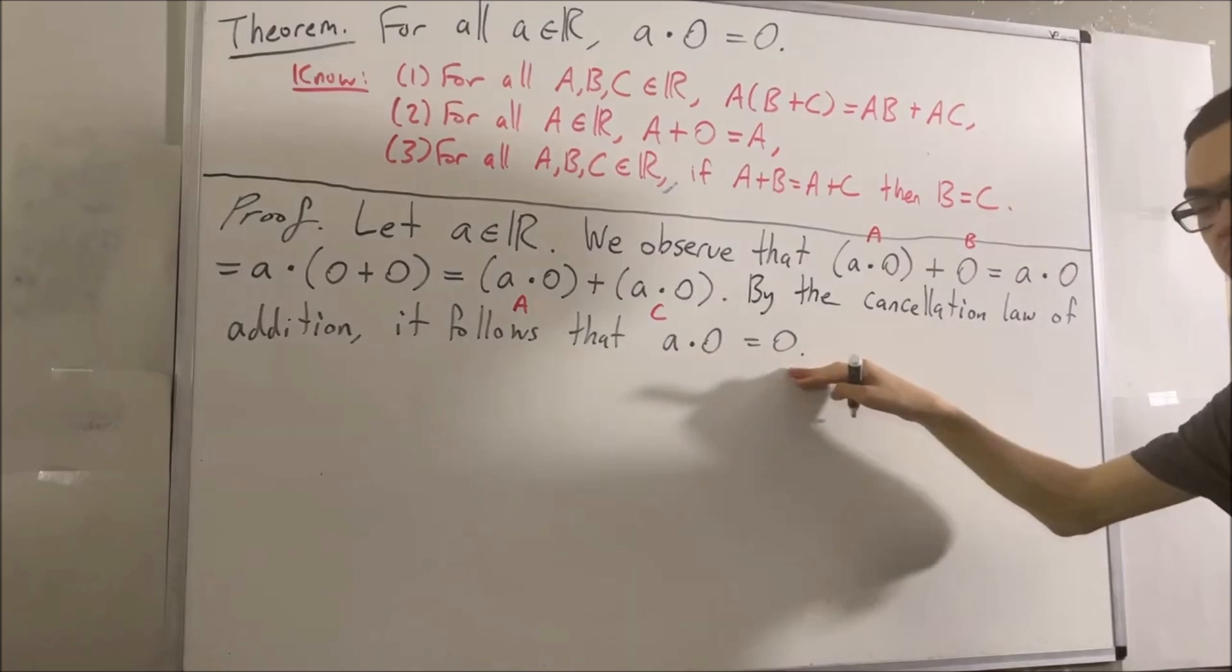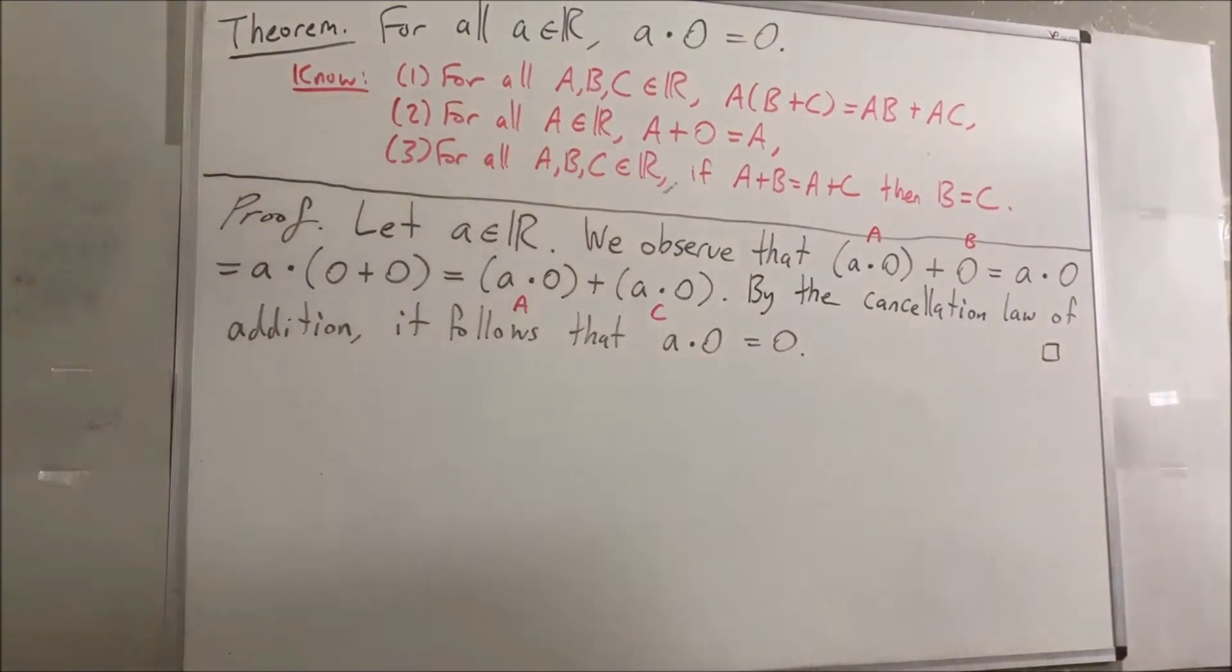So, a times zero is equal to zero. And so this completes the proof. And that's pretty much it for this video.